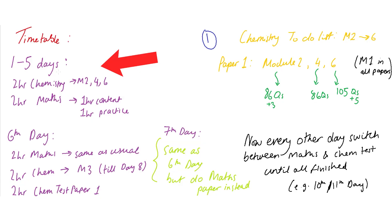I've already mentioned this before so it will take you 1 to 5 days to finish module 2, 4, 6 content and when you're doing this you do two hours chem and two hours maths. In the maths you do one hour content and one hour practice and I'll go on how to do this later on. And the reason why it'll take you five days is because for module 2 there's 86 questions plus 3, 86 questions for 4 and 105 questions for module 6 plus 5.